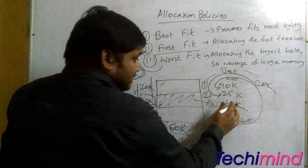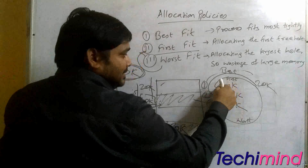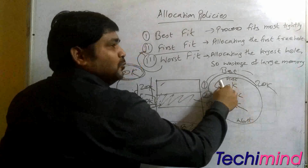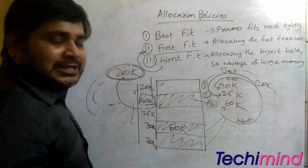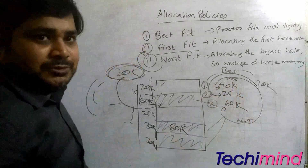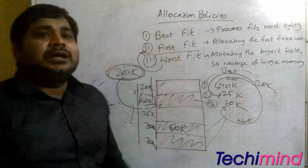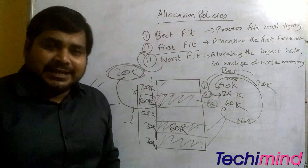If the 60K partition is positioned first and the 40K second, then worst fit and best fit could coincide depending on arrangement. This is all about the three memory allocation policies: best fit, first fit, and worst fit.